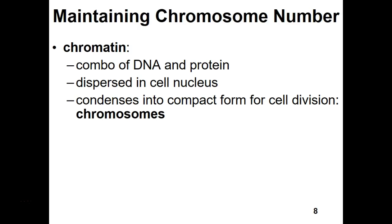On page 81, chromatin is what our DNA looks like when it is unwound and loosely sitting in the cell. When it condenses, it's called a chromosome. When chromosomes replicate, we have two sister chromatids that make up a chromosome, as shown at the top of page 81.